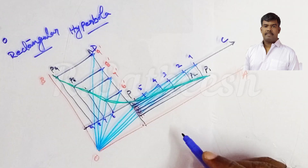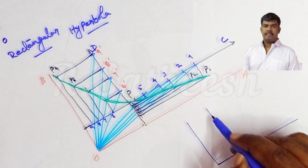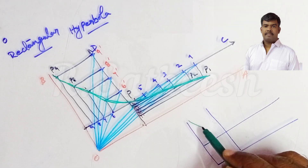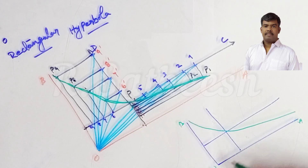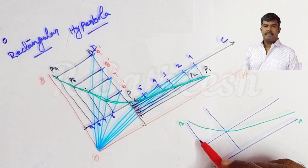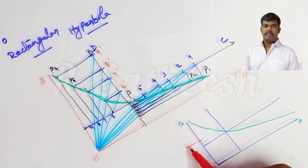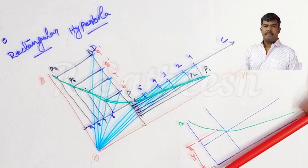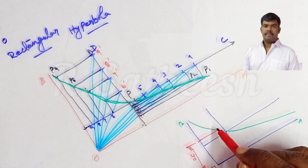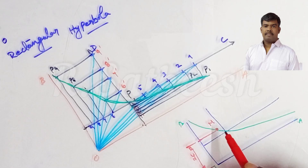For the tangent construction: the distance given is 20 mm from an asymptote — we can choose either OA or OB. For example, let us consider 20 mm from the OA asymptote. The vertical distance here is 18 mm and this one is 24 mm, so the point at distance 20 mm from OA — let us call this point M — is marked on the curve.